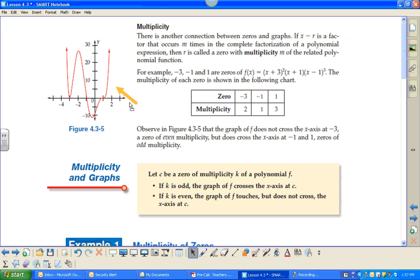Here we have a graph that has zeros of negative 3, negative 1, and 1. The graph is represented by this function: x plus 3 quantity squared, plus x plus 1, times x minus 1 quantity cubed.